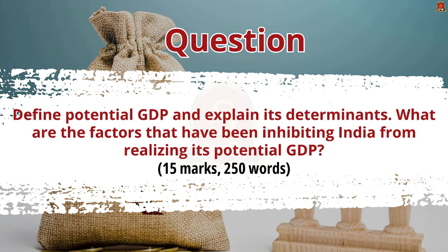The question is: Define potential GDP and explain its determinants. What are the factors that have been inhibiting India from realizing its potential GDP? It is a previous year question from UPSC Mains Paper 3 — a straightforward question asking about the potential and determinants of GDP. In the body part, we have to elaborate upon the factors inhibiting India from realizing its potential.